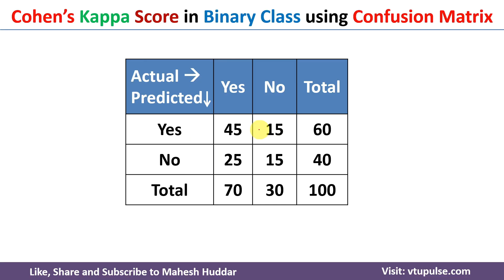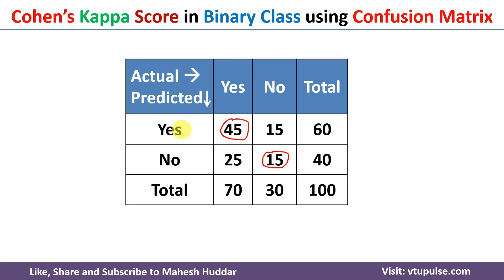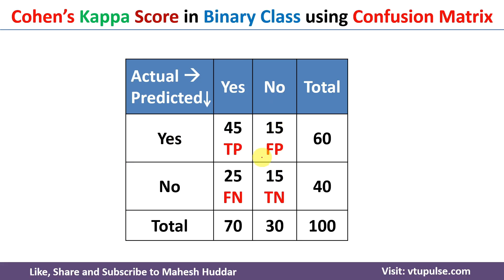For each class, values are given along with the totals. The value 45 means actually yes and predicted as yes — that is true positive. The value 15 means actually no and predicted as no — that is true negative. The value 25 means actually yes but predicted as no — that is false negative. And the remaining value means actually no but predicted as yes — that is false positive.